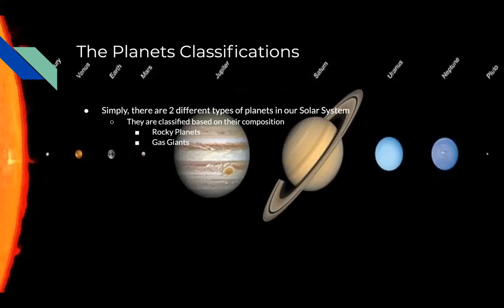There are two different types of planets in our solar system, and they are classified and given names based on what they're made out of. So we have the rocky planets and the gas giants.